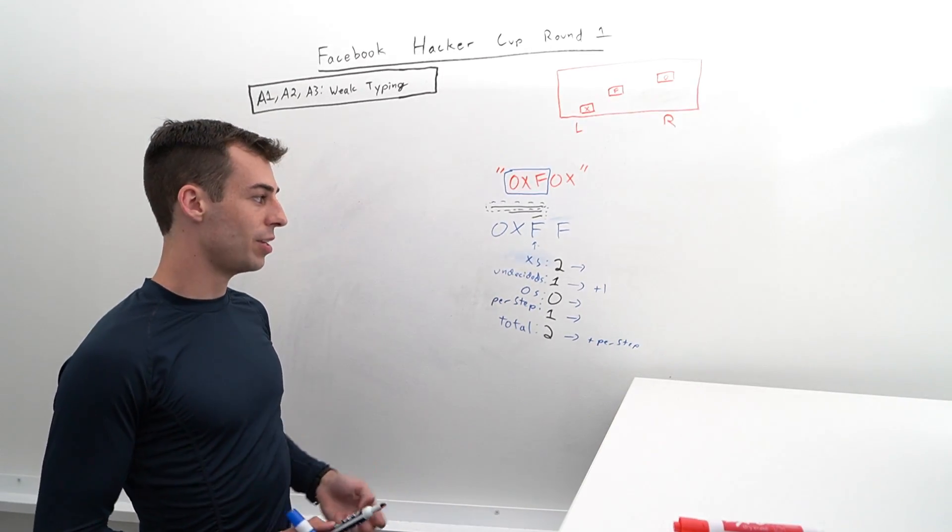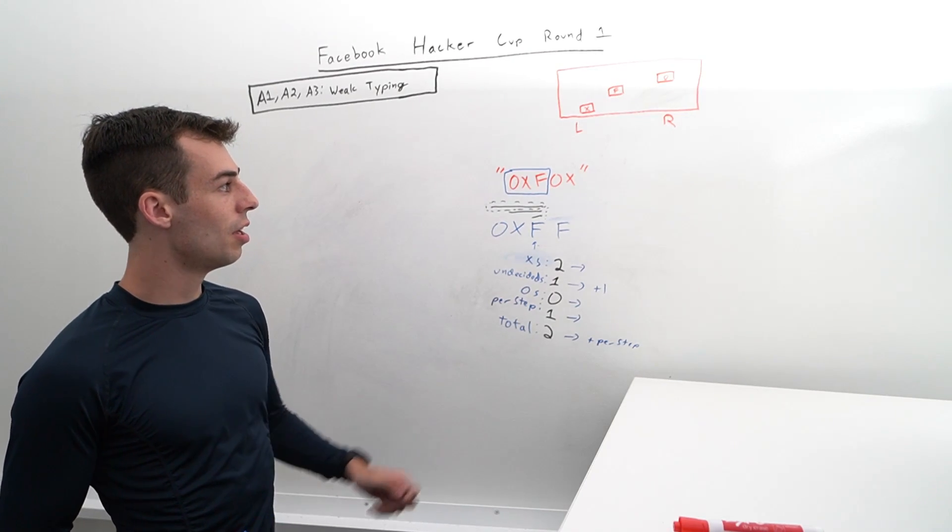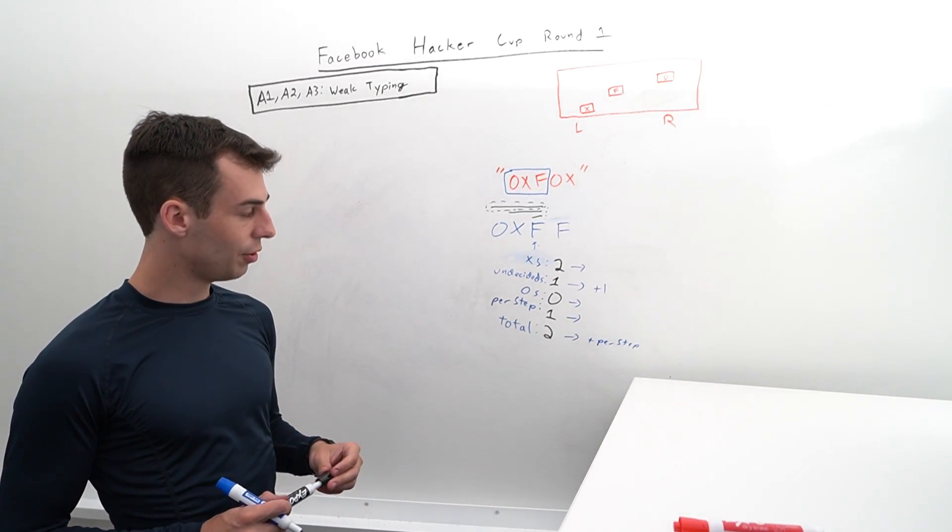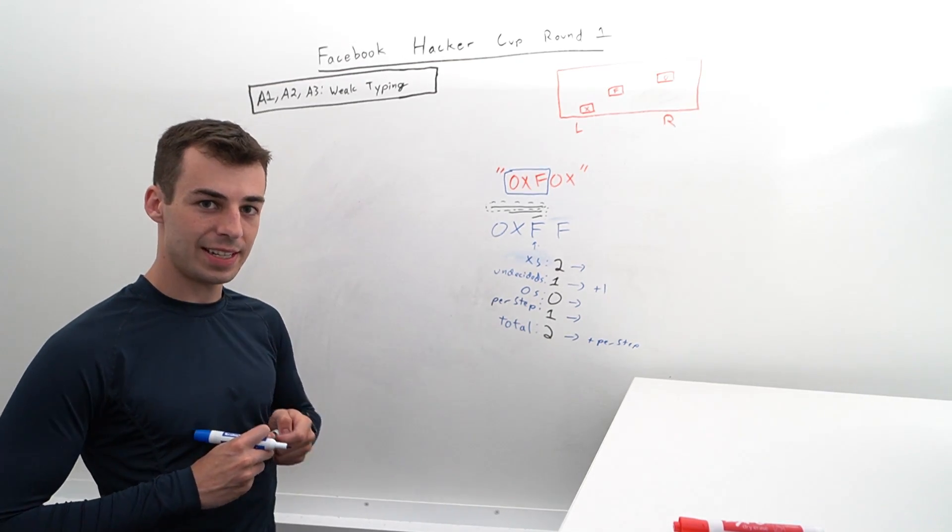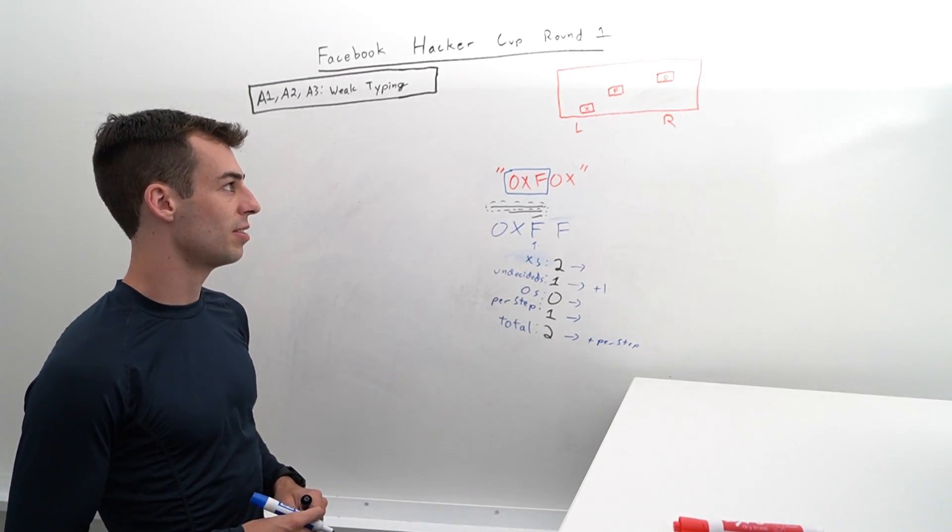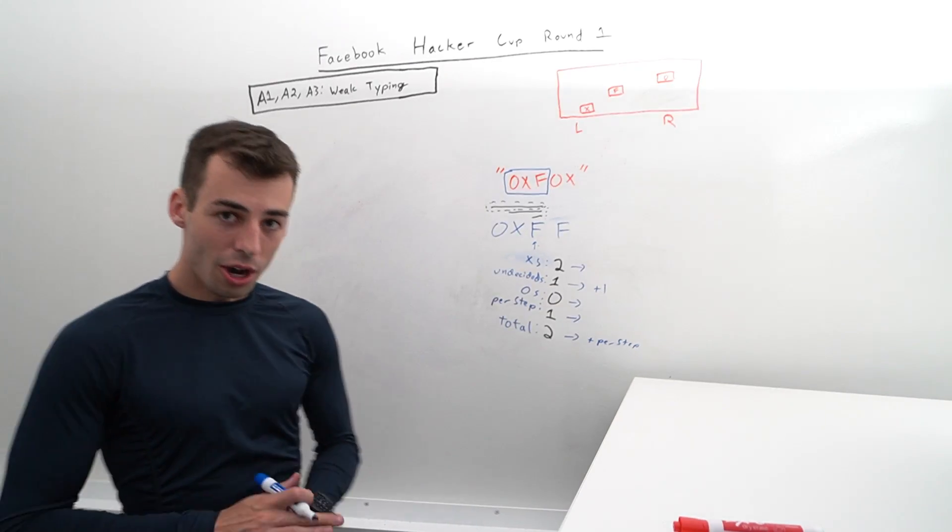And this is the solution to problem A2. We want to implement this for the F, the X, and the O, which isn't too difficult. It should be relatively easy to implement, but you just have to be careful keeping track of all these variables. It's a bit messy. Awesome.